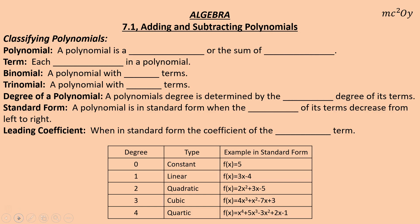Let's go on to a little more vocab: classifying polynomials. A polynomial is a monomial — poly meaning many — a polynomial is made up of many monomials, or it could just be one monomial, or the sum of monomials. Notice this polynomial is made up of five monomials. Those five monomials make up this polynomial. It could just be one monomial; it could be the sum of multiple monomials. Each monomial is what we call a term.